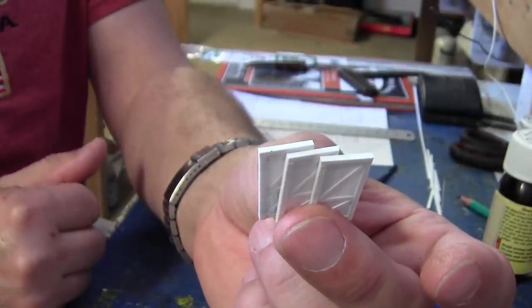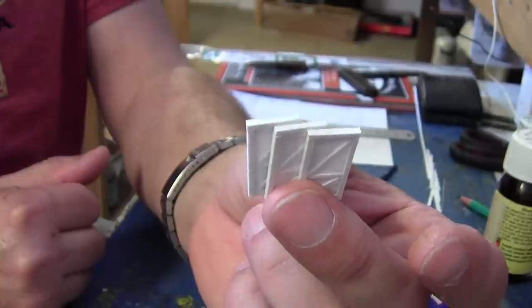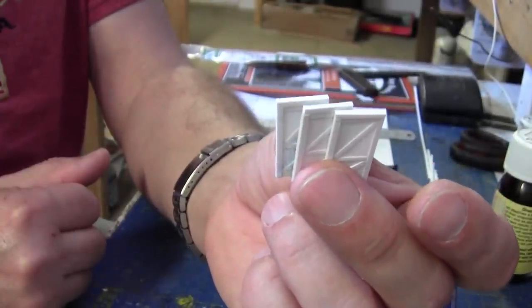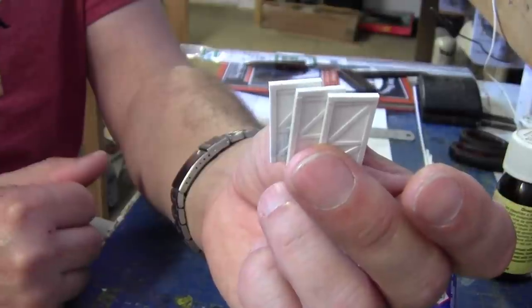And once all these are dried, then we can put the diagonal braces in. Like so. And here's one of the doors complete with frame, cross members and diagonal braces.